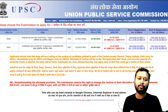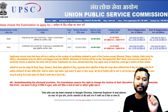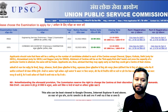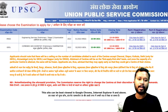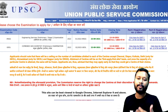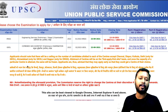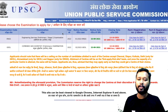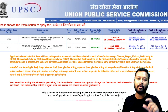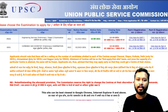One important thing on this same page: applicants should note that there will be a ceiling on the number of candidates allotted to each center, except Chennai, Dispur, Kolkata, and Delhi — only for the GEOL exam — and Ahmedabad only for GEOL, and Nagpur only for Engineering. Allotment of centers will be on a first-apply, first-allotted basis. Once the capacity of a particular center is attained, it will be frozen. Candidates are advised to apply early so they get the center of their choice.